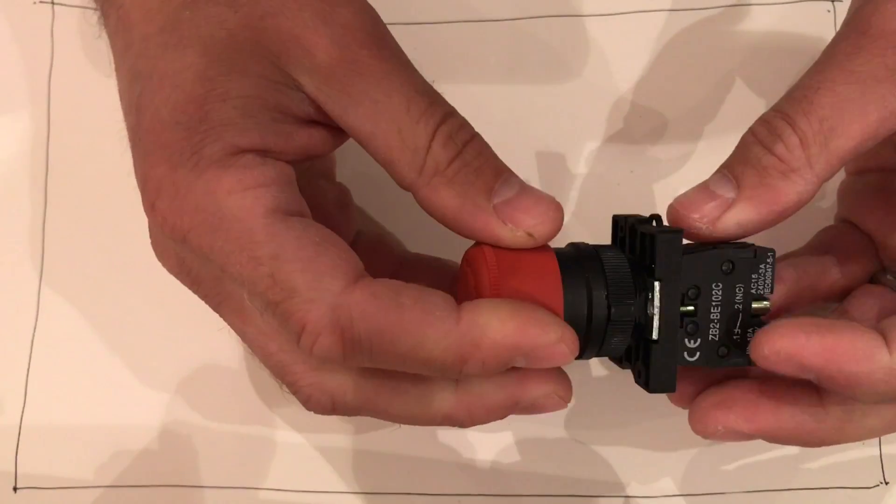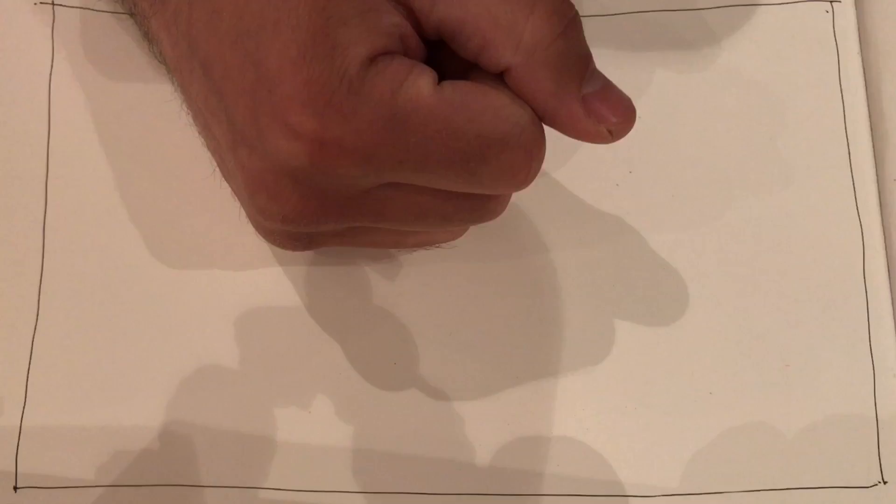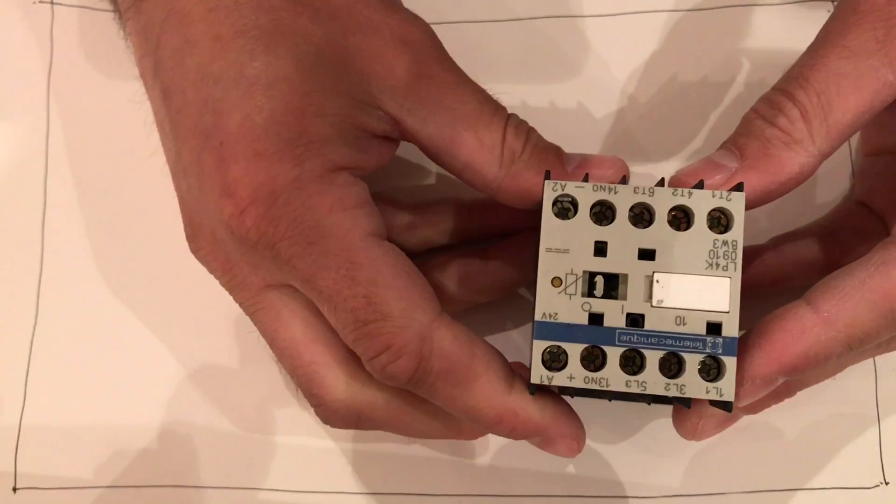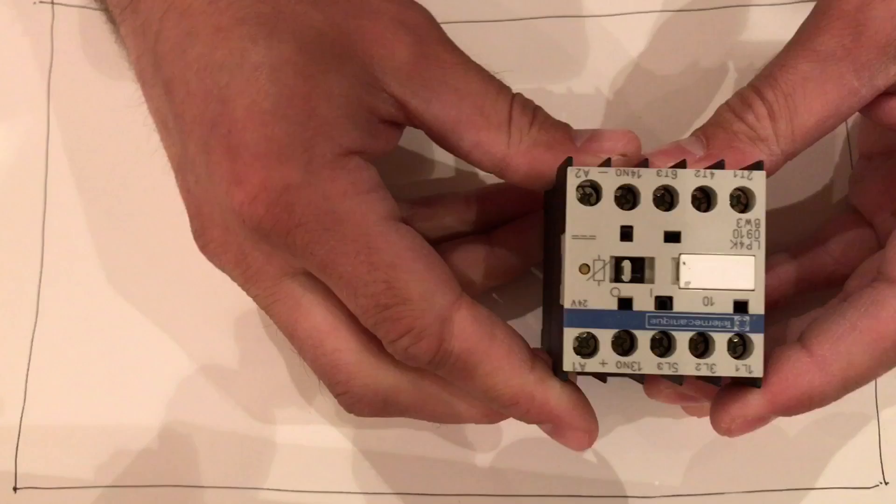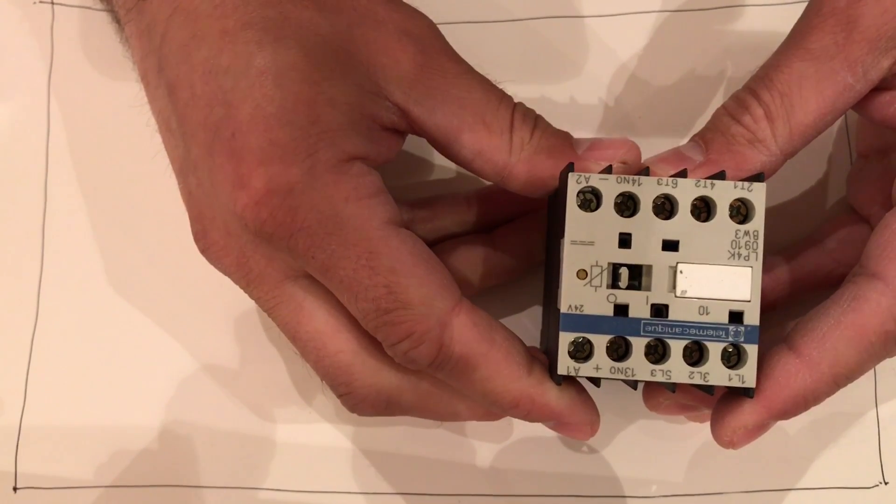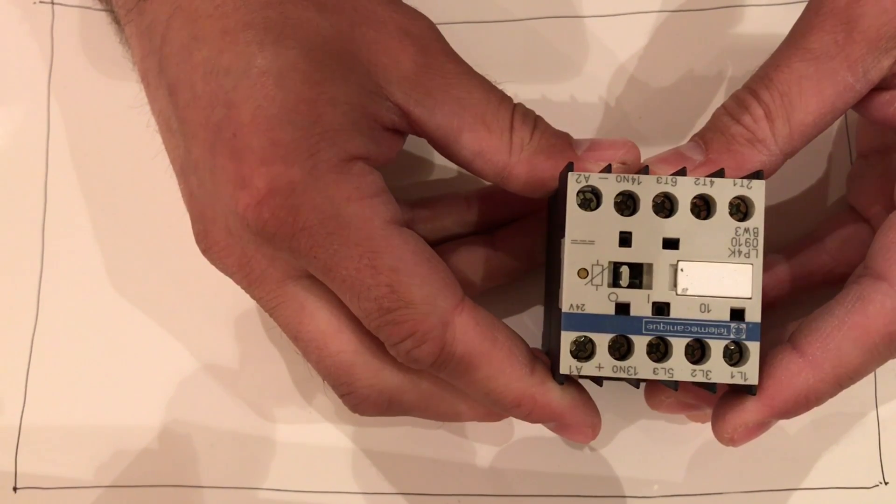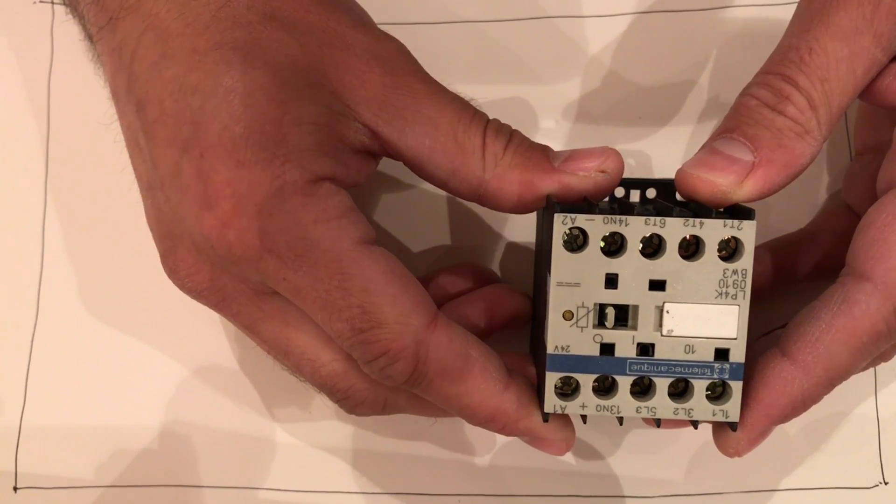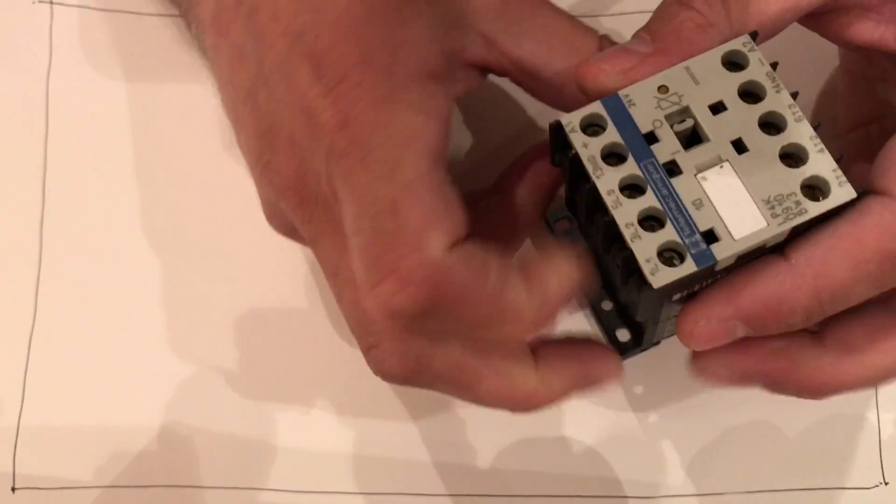I've got the main contactor with a 24 volt coil which switches the larger AC current, providing power to the large power supply and the drivers.